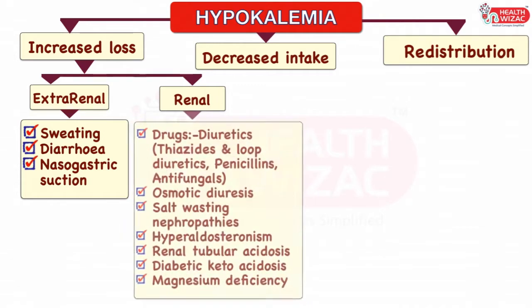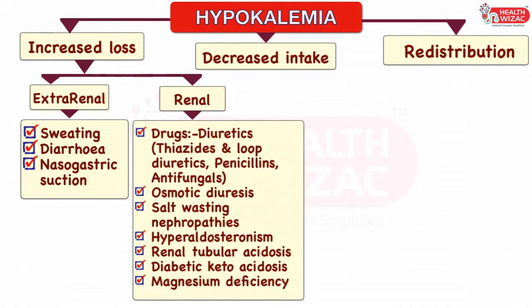Renal loss may be due to drugs like diuretics including thiazides and loop diuretics, or due to penicillin derivatives, or due to antifungals like posaconazole and itraconazole.